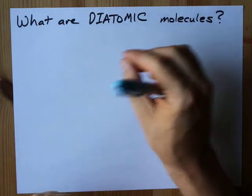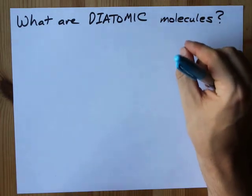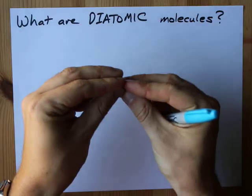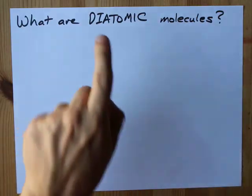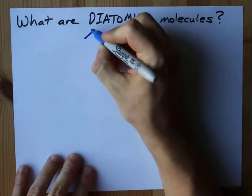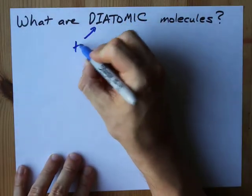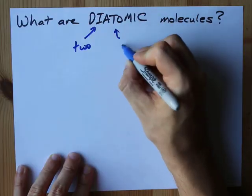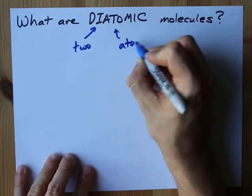What are diatomic molecules? They are any particle that has exactly two — that's what the 'di' is for — atoms in it.